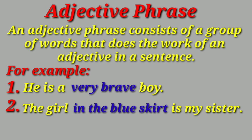Adjective phrase. An adjective phrase consists of a group of words that does the work of an adjective in a sentence. For example, 'He is a very brave boy' — 'very brave' is the adjective phrase. 'The girl in the blue skirt is my sister' — 'in the blue skirt' is the adjective phrase. A phrase can do the work of an adjective, and thus can be called an adjective phrase.